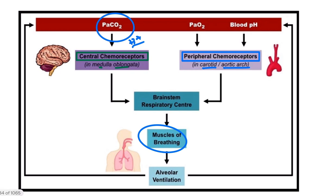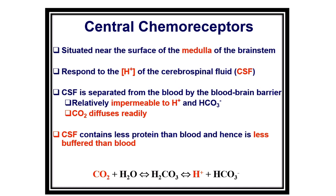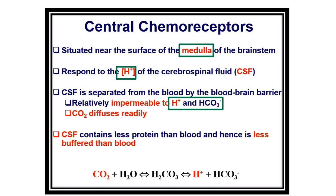The central chemoreceptor is located in the medulla of the brainstem and is responsive to hydrogen ion concentration — this is very important. The cerebrospinal fluid is separated from the blood by the blood-brain barrier, which is impermeable to hydrogen ions and bicarbonate ions. However, carbon dioxide diffuses readily through the blood-brain barrier, making it an important buffer in this context.